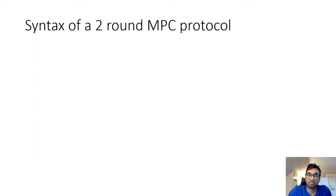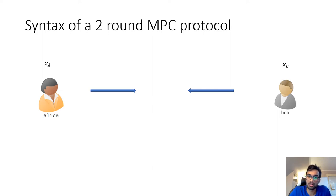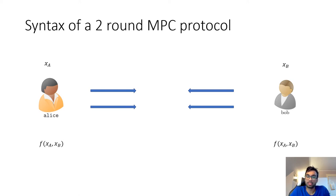Our goal is to construct a two-round maliciously secure MPC protocol in the plain model. We begin by making useful observations about any two-round MPC protocol. The syntax for a two-round MPC protocol looks as follows: Alice and Bob have their private inputs — I'm illustrating for two parties, but everything extends to multiple parties. In the first round they simultaneously exchange their first round messages, in the second round they exchange their second round messages, and after this both parties can output the function on their private inputs.